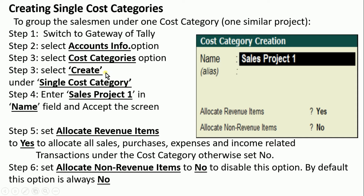There may be exam questions related to cost category and cost center — how to create, how to create a cost center — write the step-by-step method. In the Create screen under single cost category, enter 'Sales Project 1' in the name field and accept the screen. We are taking Sales Project 1 as the cost category.